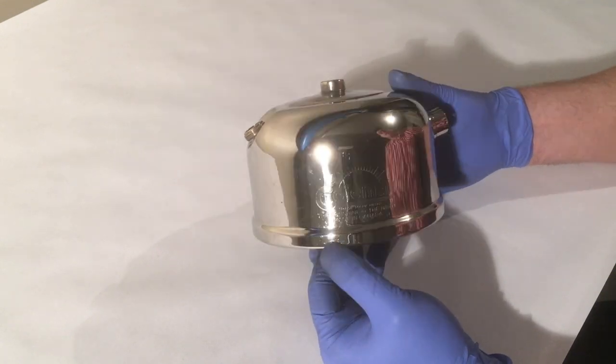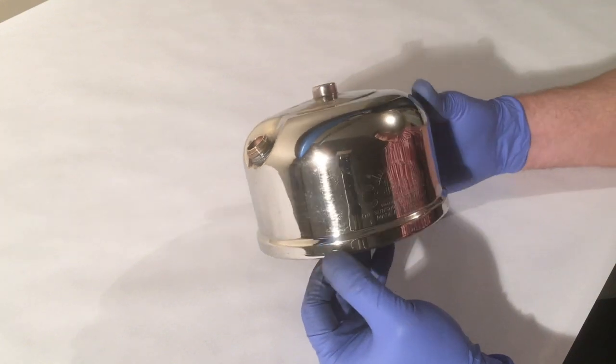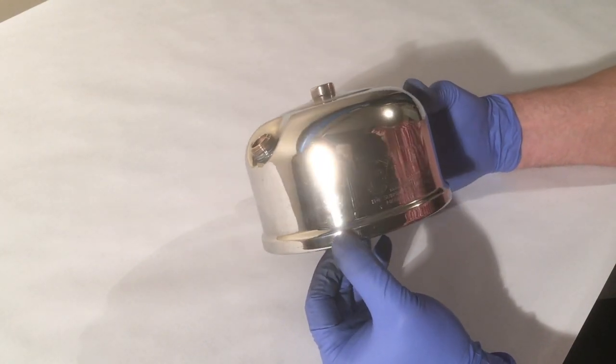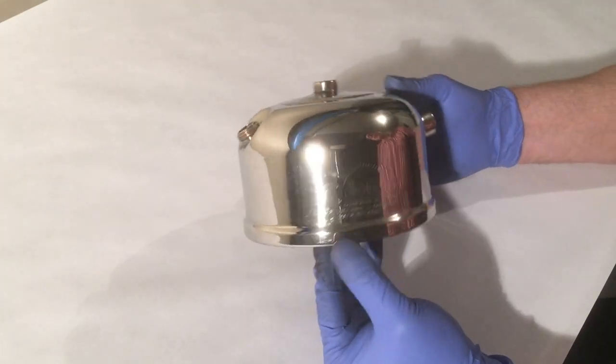And I find using the buffing wheel, you don't have to use any pressure. Just hold it against the buffing wheel and use that Jeweler's Rouge, which is a very, very fine polish. And that will take most of the remains of the oxidation, it'll take the scratches out, it'll buff most of the dirt and spots out. And as you can see, it looks great now.